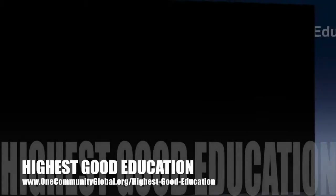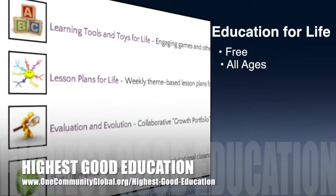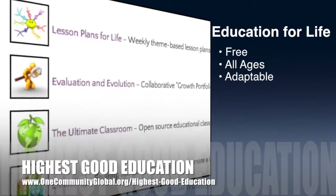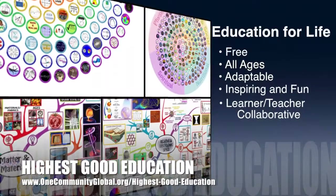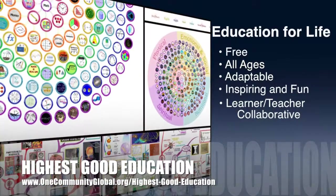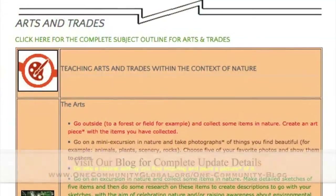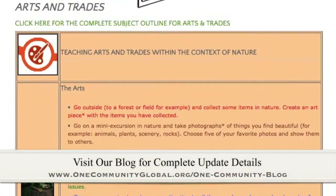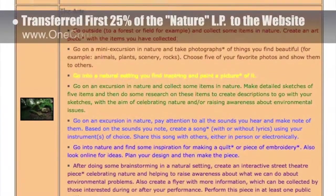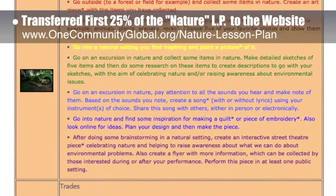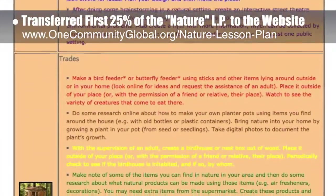OneCommunity's approach to highest good education is open source and free shared, designed for all age groups, adaptable to any schooling environment, inspiring and fun for all participants, learner-teacher collaborative, and it includes U.S. Common Core standards. This week the Core Team transferred the first 25% of the written section and images for the Nature lesson plan to the website, which you can see here.